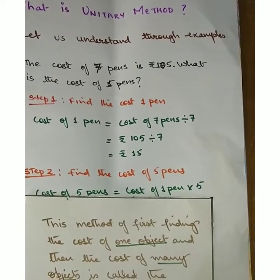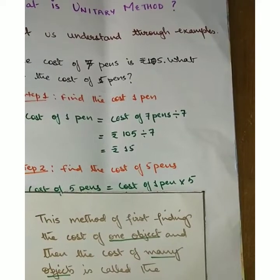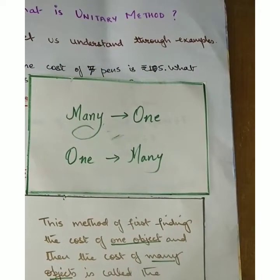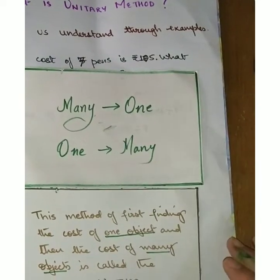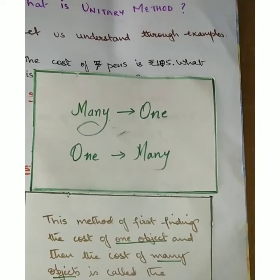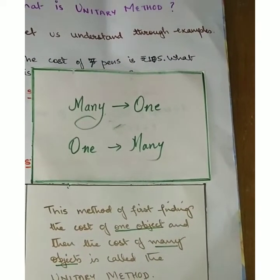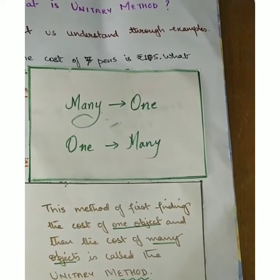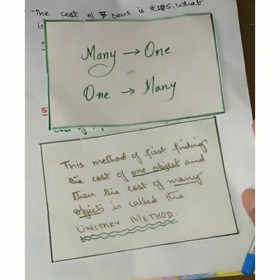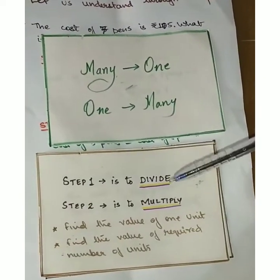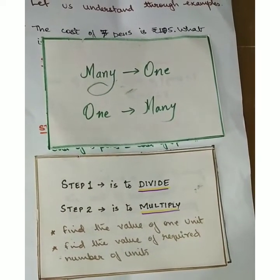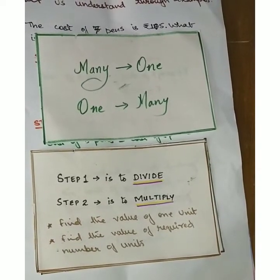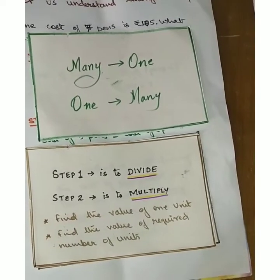In unitary method, the cost of many things is given and we have to find the cost of more or fewer things. We first go from many to one, then one to many. In step one we are dividing, and in step two we are multiplying — finding the value of one unit first, then finding the value of the required number of units.